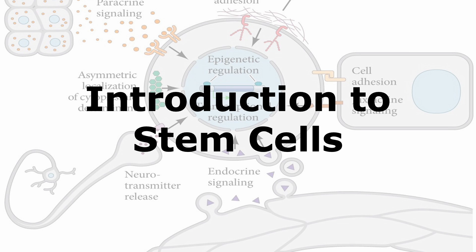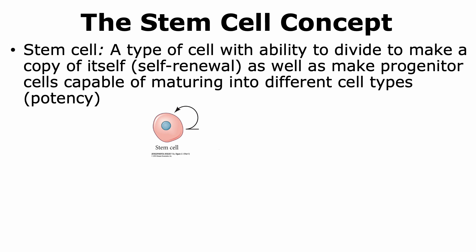Welcome to the Stem Cells module. In this talk, we're going to have a brief introduction to the world of stem cells. We'll start with the stem cell concept. A stem cell is a type of cell that has the ability to divide and produce a copy of itself, which is called self-renewal, as well as produce a daughter cell that has the potential to generate into progenitor cells, which are capable of maturing into different cell types. That is called potency.